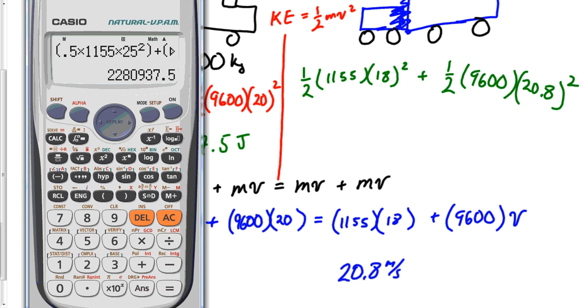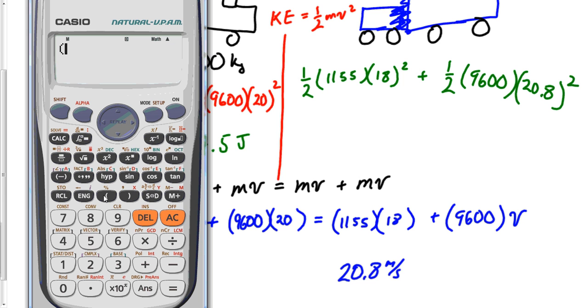Now let's do the kinetic energy for this right side. So I'm going to get this calculator out of my way. Here we go, one more time. Half times 1155 times 18 square plus half times 9,600 times 20.8 square. And this is a very common thing to be asked. What do we got here? 2,263,782 joules.